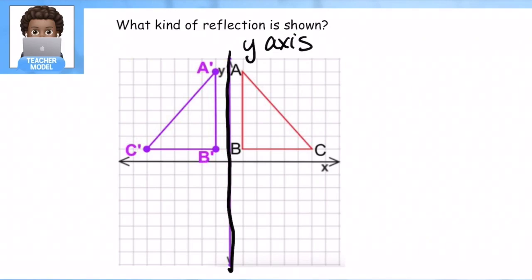And something you notice, notice how our points, like here's A, here's also A with a little dash. That means this is the reflection. Because you see these little dashes on them. And this is the original.